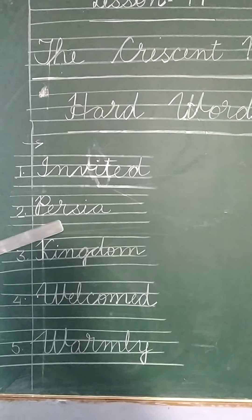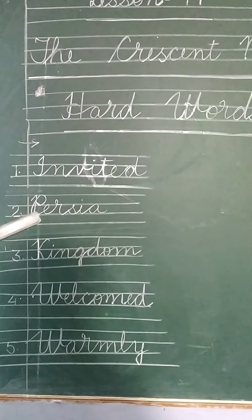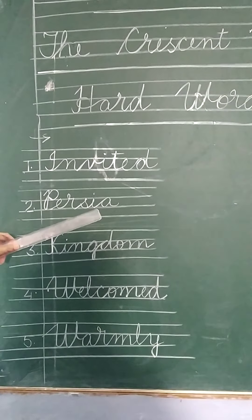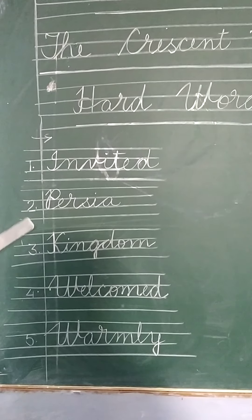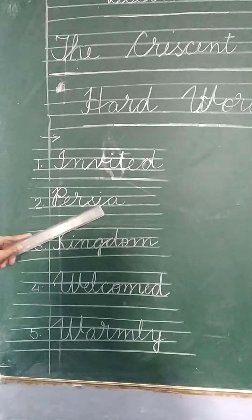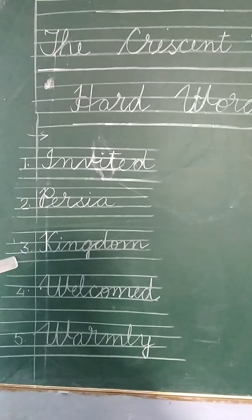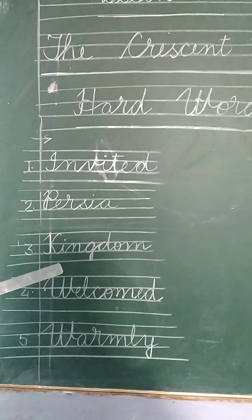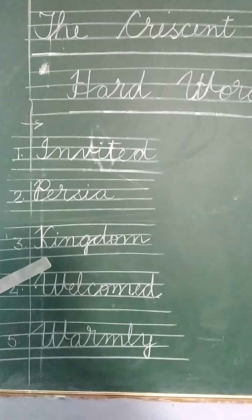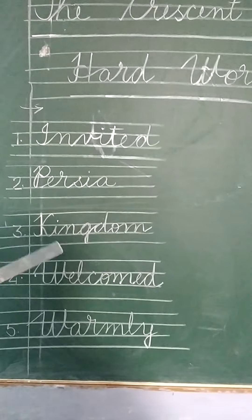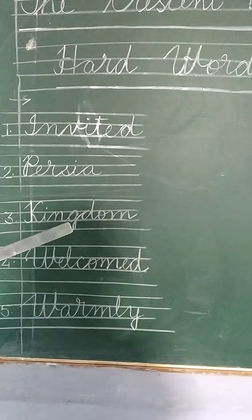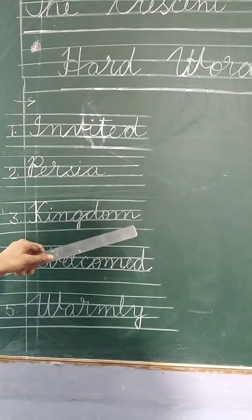Number two word is Persia. Persia is the name of a country — P-E-R-S-I-A, Persia. Number three word is kingdom. The another word for kingdom is state — K-I-N-G-D-O-M, kingdom.